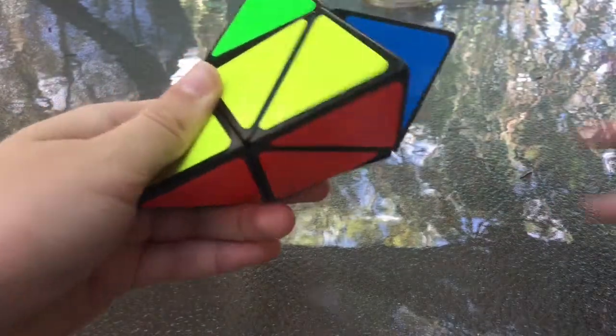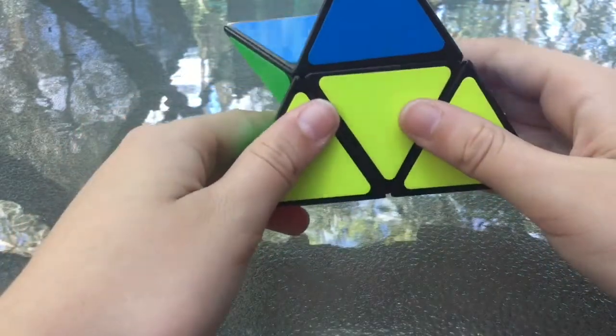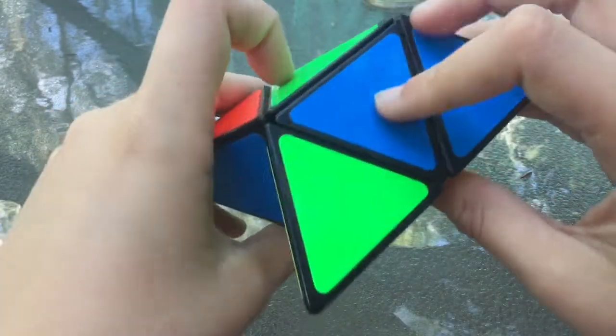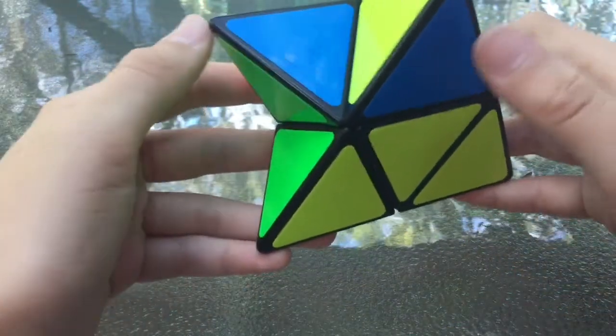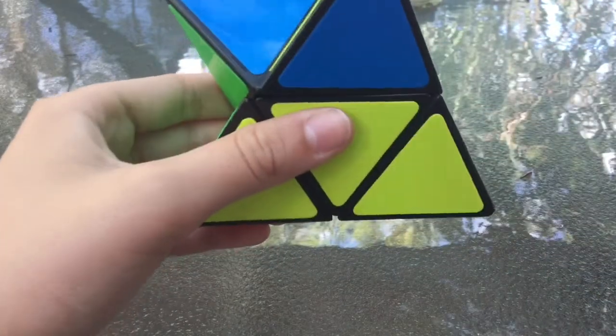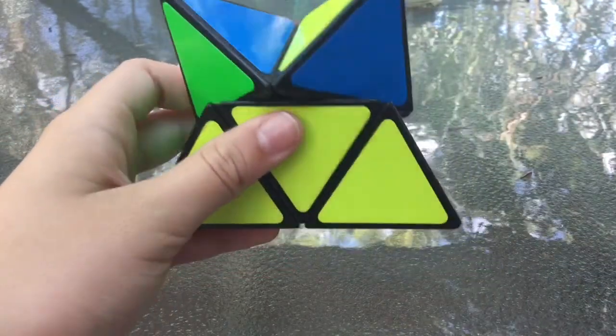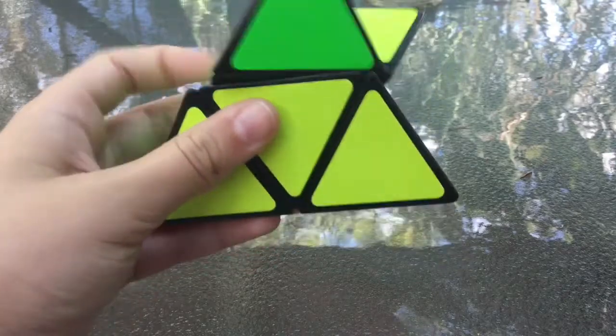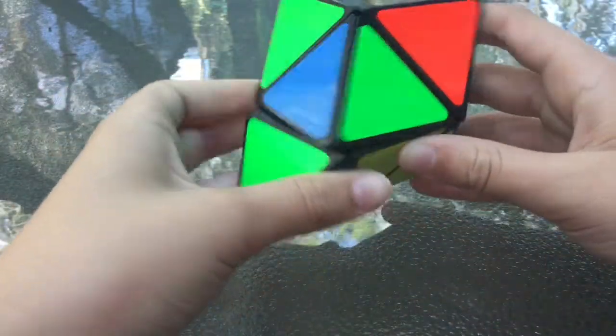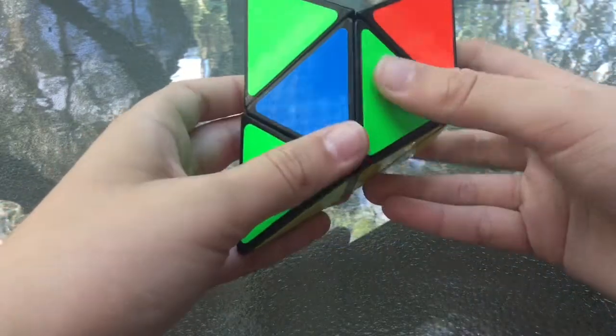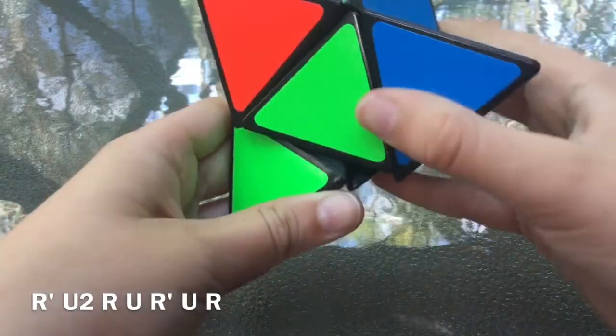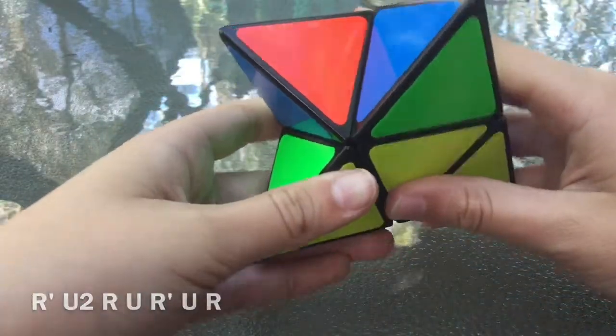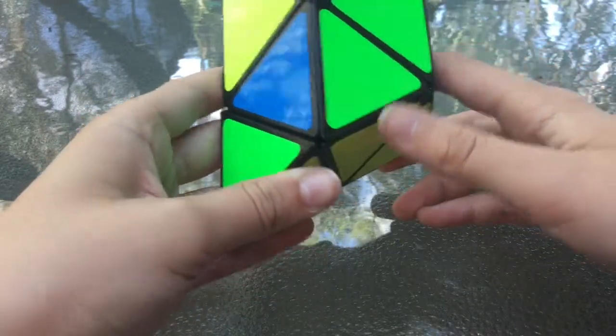Okay, so now I need to orient the last layer. So, if that was the first layer, this is the last layer. What you do, these two triangles will always be oriented correctly, but these two won't. If you have it so none of them are oriented, just make it so one of those triangles are here, like in the bottom right-hand corner. And do the algorithm, right inverted, up two, right, up, right inverted, up, right. And repeat if you will, you might have to.